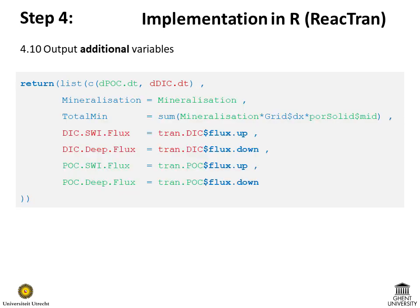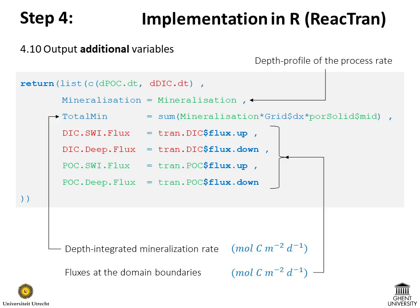It is often useful to output additional variables from the model function. For example, to aid interpretation of the results, it is useful to output the mineralization rates along the spatial domain. Similarly, to check mass balances and construct the total carbon budget, it is useful to output the depth-integrated rate of mineralization and the fluxes of POC and DIC at the domain boundaries.